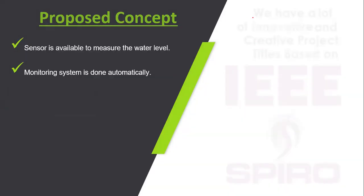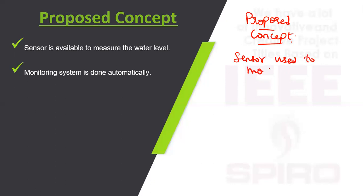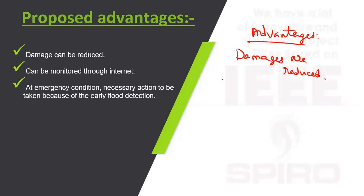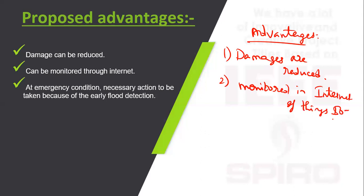In the proposed concept, sensors are used to monitor the dam automatically using Internet of Things (IoT). The advantages are that damages are reduced, the system can be monitored continuously, and necessary actions are taken promptly.